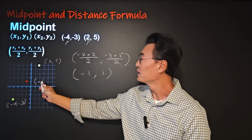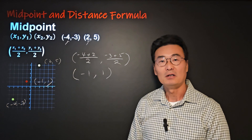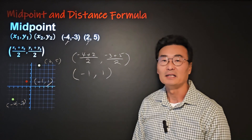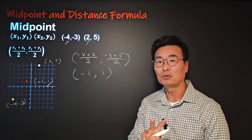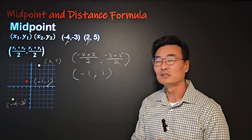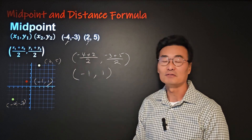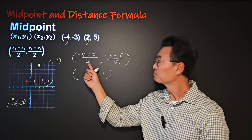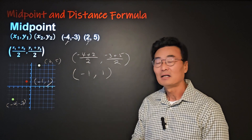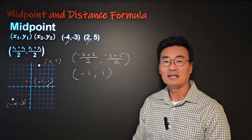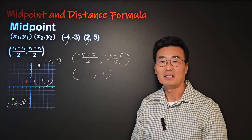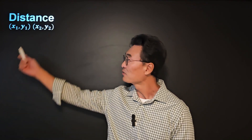We get negative 1 and 1 as our midpoint, which will be right here. The midpoint is at negative 1 comma 1. To find the midpoint of two points, all you have to do is add the x's of the two points divided by 2, add the y's and divide by 2.